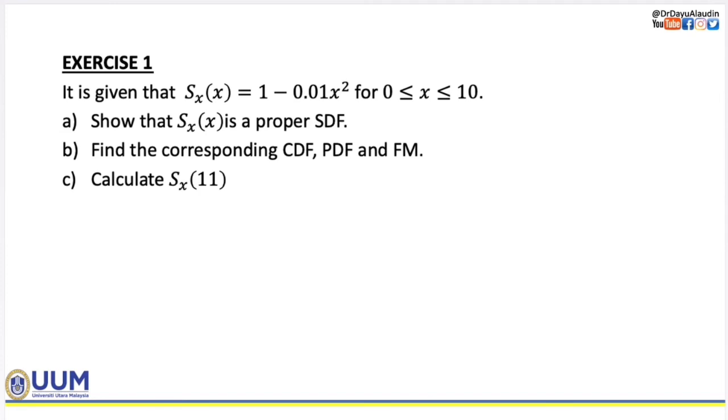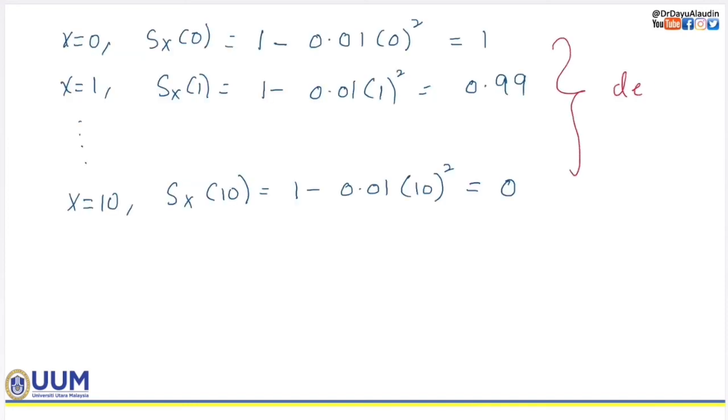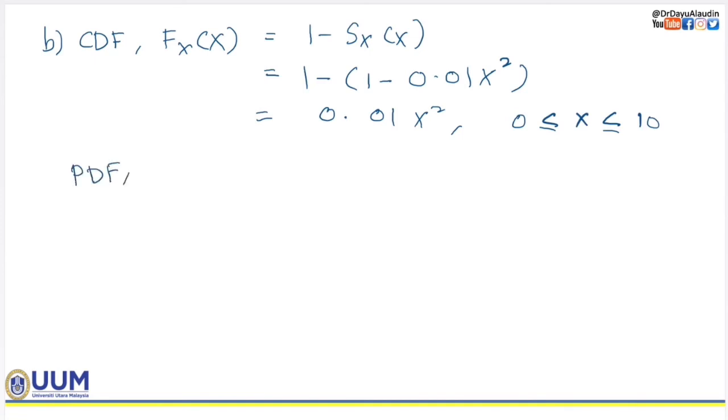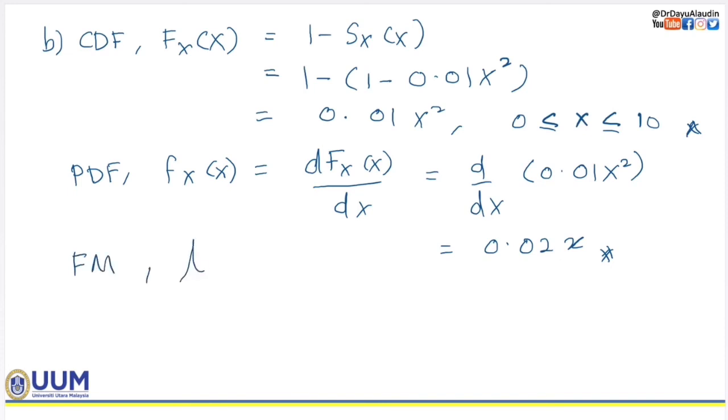Now we go to exercise 1. First show that Sx is a proper SDF. So it shows that this function is decreasing and at Sx equal to 0 is equal to 1 and Sx equal to 10 or the infinity or the larger number it becomes 0. So it is proper. Let's try B. And then we find the PDF. The PDF is referring to small f and we can use CDF to find the PDF.